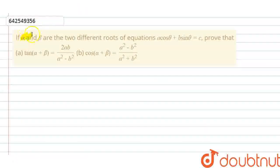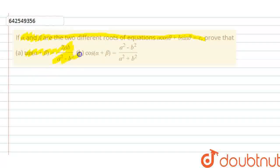Hi everyone. The question is: if alpha and beta are the two different roots of the equation a·cosθ + b·sinθ = c, we need to prove that tan(α+β) = 2ab/(a²−b²), and the second part is cos(α+β) = (a²−b²)/(a²+b²).